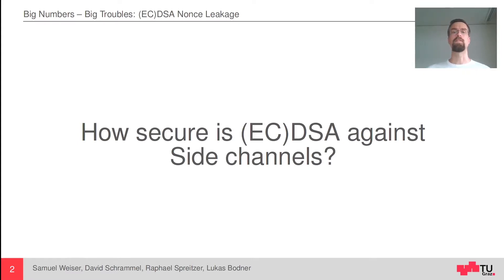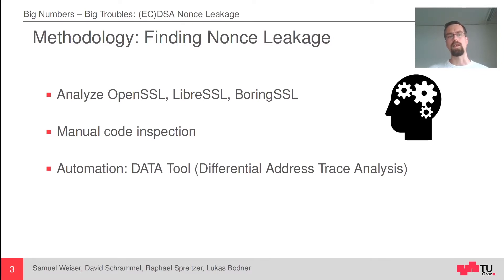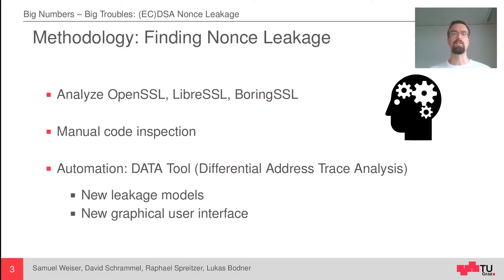When we started analyzing it, we felt like searching for a needle in a haystack, not knowing whether any needles are left to find. We started off analyzing the popular OpenSSL library and then also included LibreSSL and BoringSSL. Our analysis was a continuous jumping around between manual code review and automation. In particular, we were using a special method called Differential Address Trace Analysis (DATA), which I presented at USENIX 2018. We used this approach and extended it, adding new leakage models dedicated to finding nonce leakage, and we also developed a new graphical user interface which greatly helped us find things we couldn't find before.